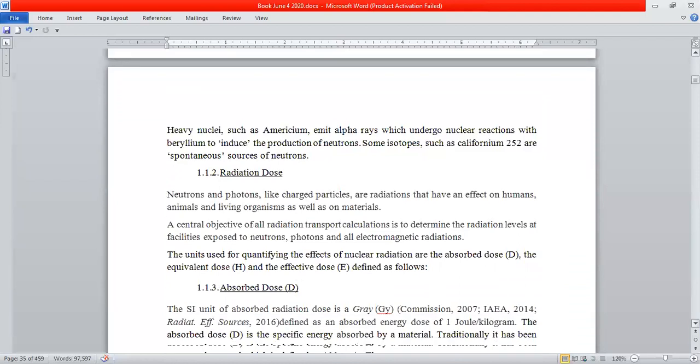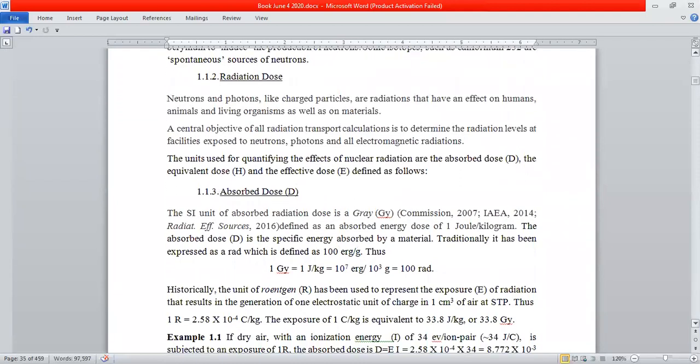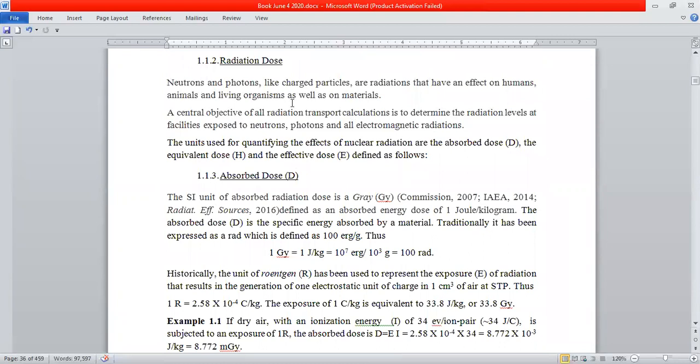How harmful is radiation? It depends on so many things: the strength of the radiation, the nature of the radiation, which organ in your body is going to be damaged. First of all, let's put some units and numbers. Neutrons and photons, like charged particles, are radiations that have an effect on humans, animals, living organisms, as well as on materials. A central objective of all nuclear engineering design is to determine the radiation levels at facilities where people working there are exposed to neutrons, photons, and all electromagnetic radiations. Let's look at three quantities: the absorbed dose, the equivalent dose, and the effective dose.